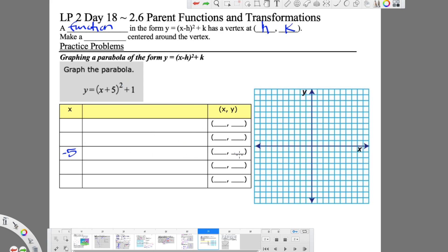So we have negative 5, 1. So it's negative 5, positive 1. So negative 5, 1, 2, 3, 4, 5, and positive 1. So there we go. We have negative 5, positive 1. That's our vertex.